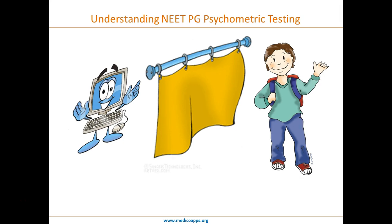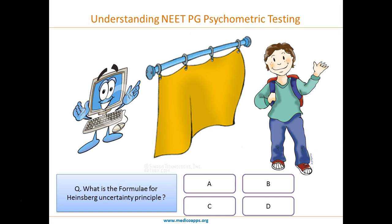What the computer does is ask a series of questions, and based on the response it will determine which class the student belongs to. Let's say the first question is a really tough one — the computer thinks only a class 12 student can answer it. The question could be: what is the formula of Heisenberg's uncertainty principle, and there are four options.